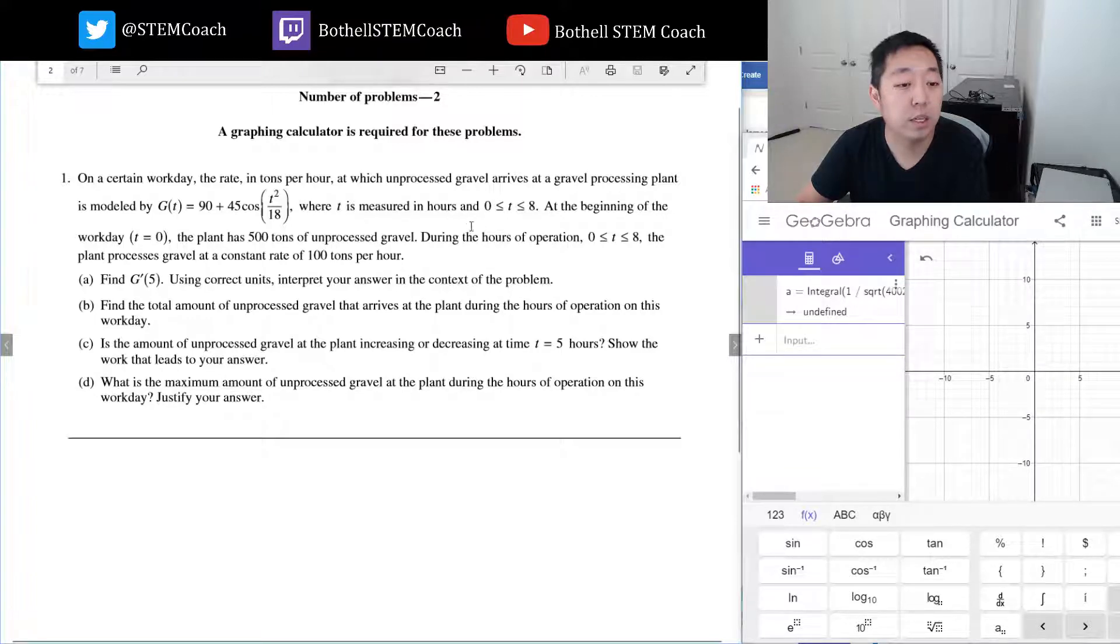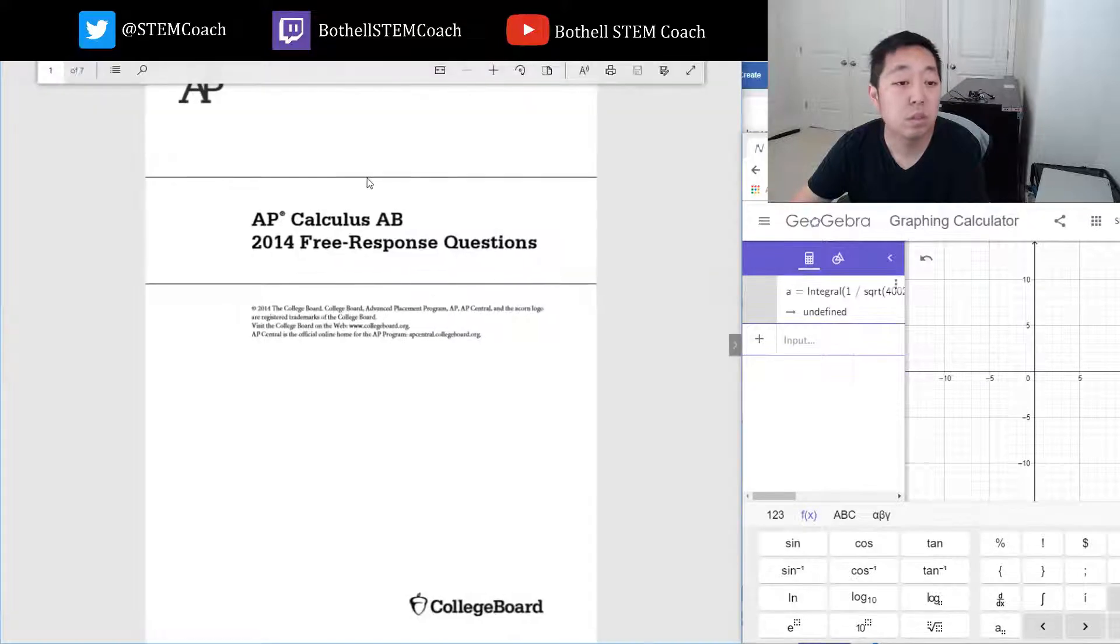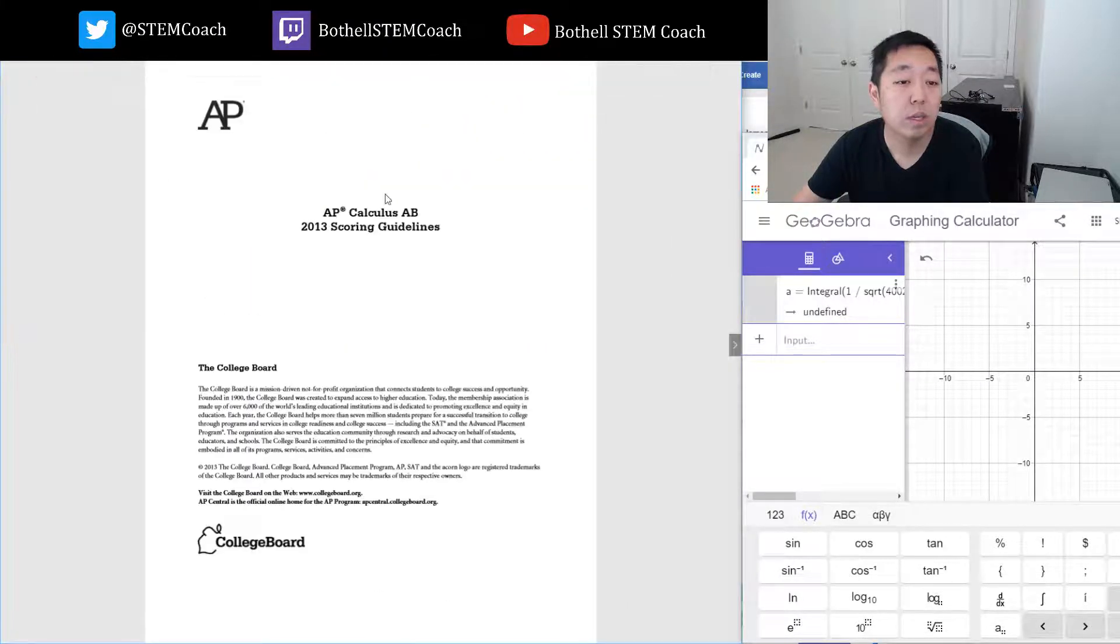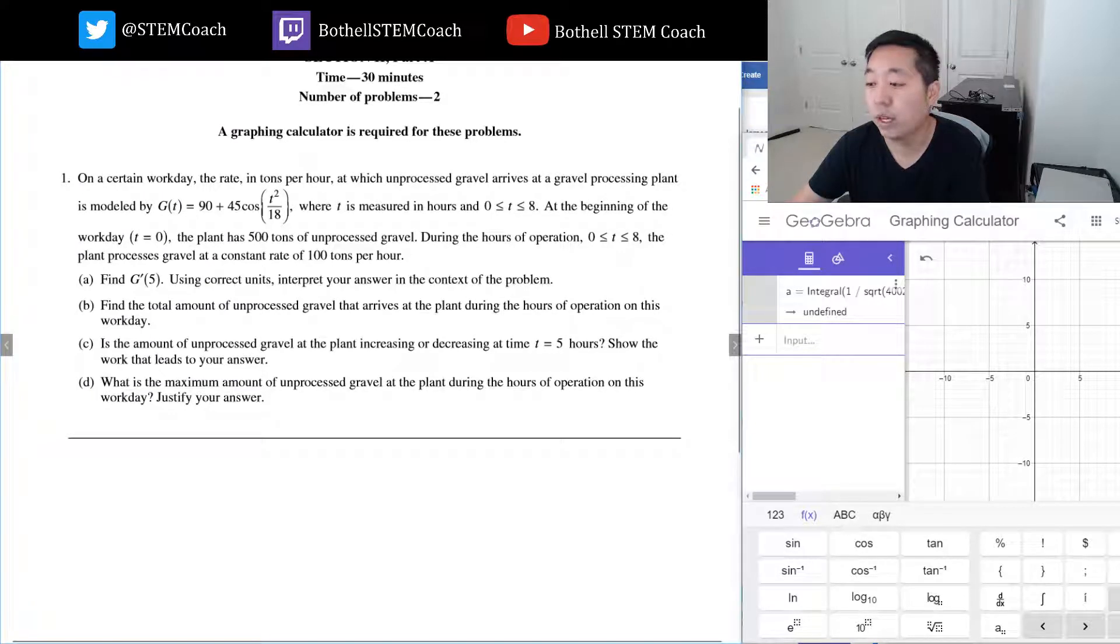At the beginning of the workday, the plant has 500... hang on, I feel like I've done this one, so I just want to confirm. Okay, sorry, I had to check. I felt like I've read this problem before. I probably have seen this question before when I tutor. I go through a lot of these questions with people, so it just sounded familiar.